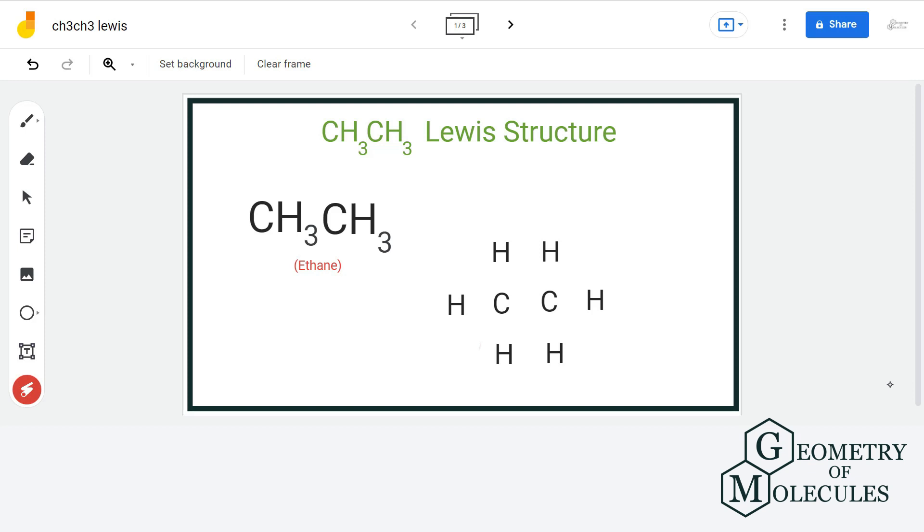Hello guys, welcome back to our channel. In this video, we are going to help you determine the Lewis structure of CH3CH3, which is normally written as C2H6, the chemical formula of ethane.